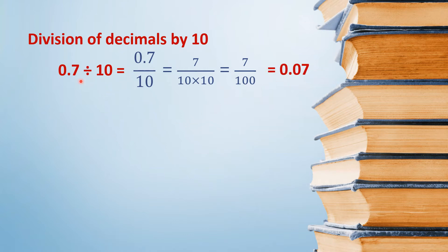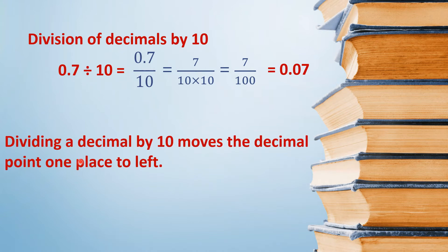Here you have seen one thing: in 0.7, there was one decimal place, and in 0.07, there are two decimal places. That means the decimal point shifted one place to the left side. So the conclusion is: when we divide a decimal by 10, the decimal point shifts one place to the left.